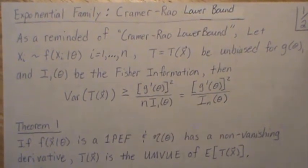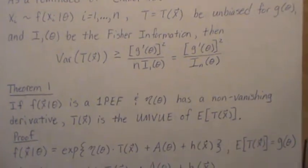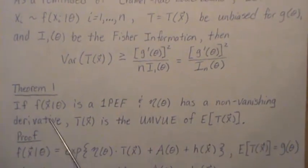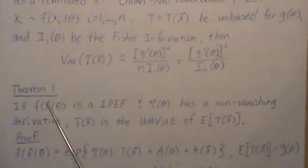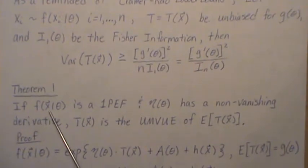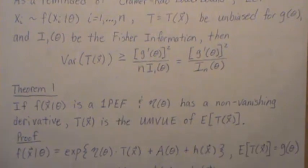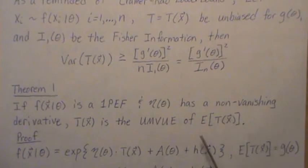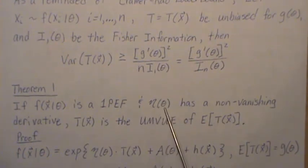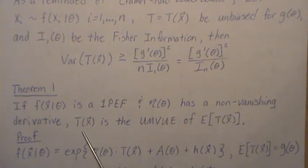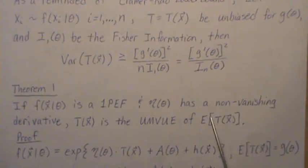That's the Cramér-Rao lower bound. Now, in Theorem 1, if f of x — and this is a vector, so it's a joint distribution — is a one-parameter exponential family, and eta of theta has a non-vanishing derivative, meaning you take the derivative and for all values of theta it can't be zero, then T of X is the UMVUE of its expectation.